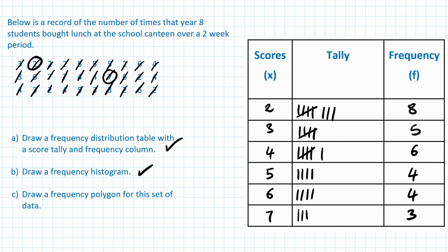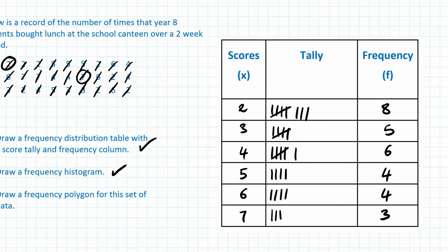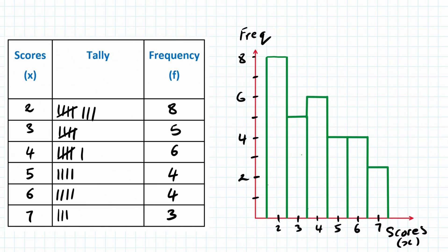Now we need to draw a frequency polygon. To do this, we just make a point first on top of each column — make sure it's right in the middle. These are the dots you need to connect together. Start from zero, and just join them all together. There you go — we have a frequency histogram and a polygon together.